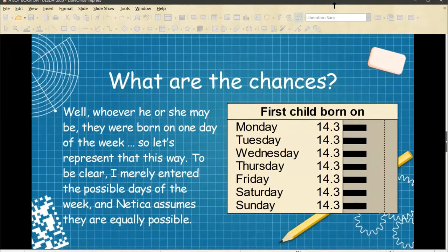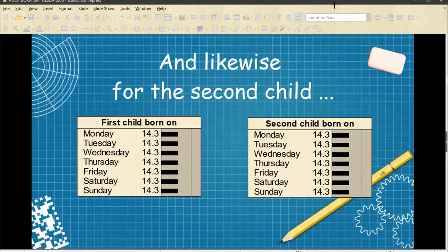What are the chances? Well, whoever he or she may be, they were born on one day of the week. So let's represent it this way. To be clear, I merely entered the possible days of the week. And Nereka assumes, rightly, that they are equally possible. So one over seven is 14.3. Likewise for the second child. The second child is born on one of these days of the week.